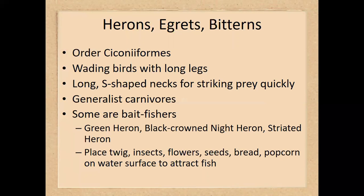The herons, egrets, and bitterns have representatives commonly found on campus. These are all wading birds with relatively long legs and long S-shaped necks, and they are generally carnivores. The green heron, black-crowned night heron, and striated heron are known for utilizing twigs, insects, flowers, pieces of bread, etc., placing them on the water surface to attract fish, and then grabbing the fish — so they are actually fishing.